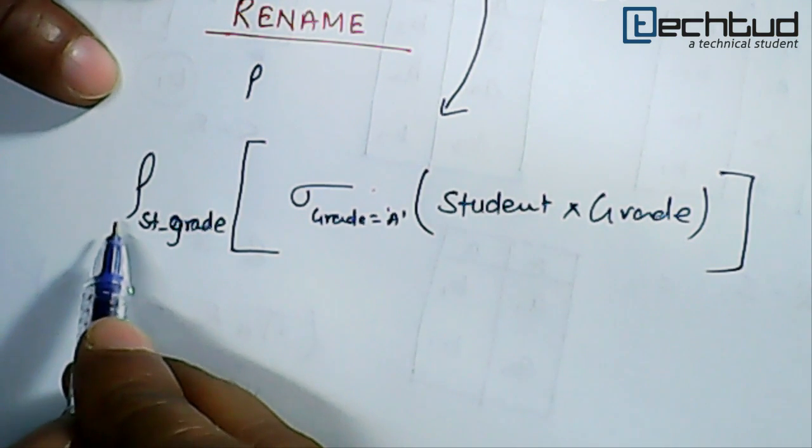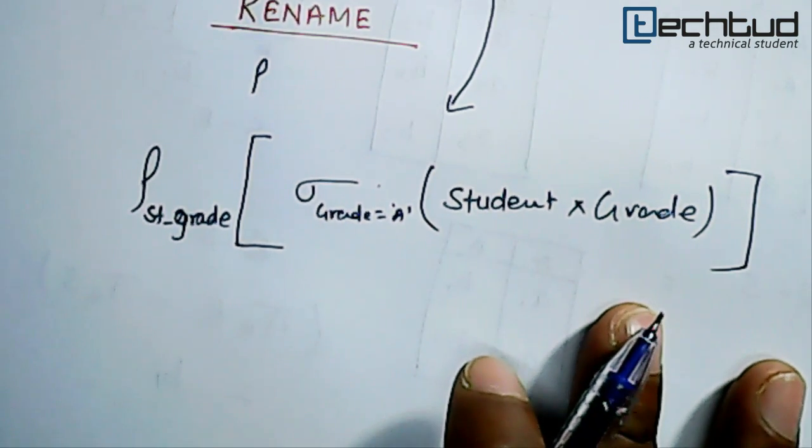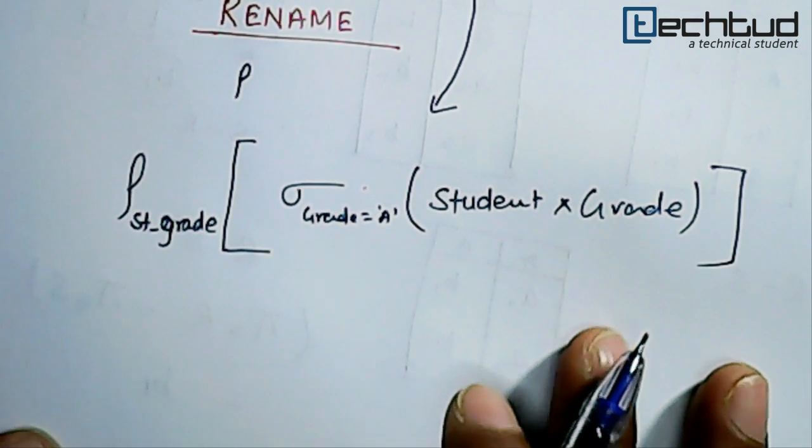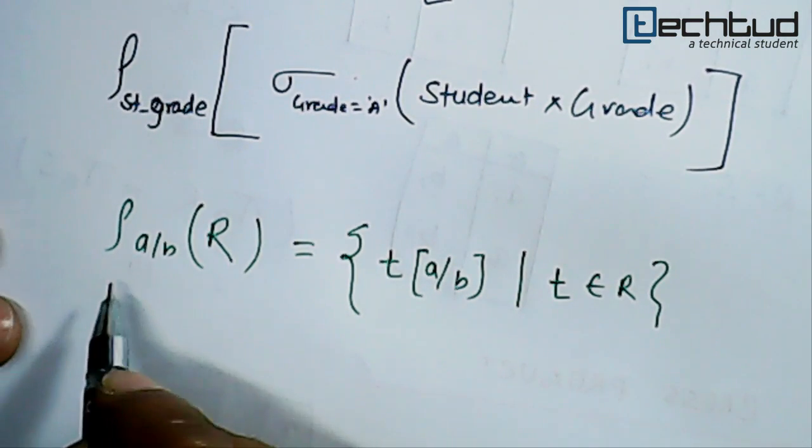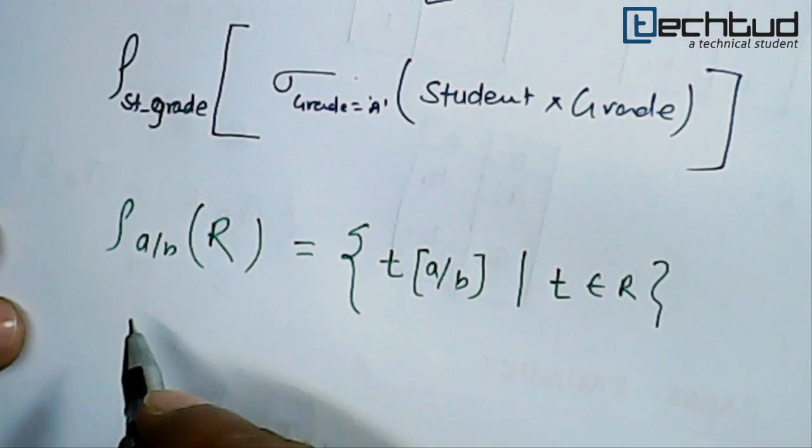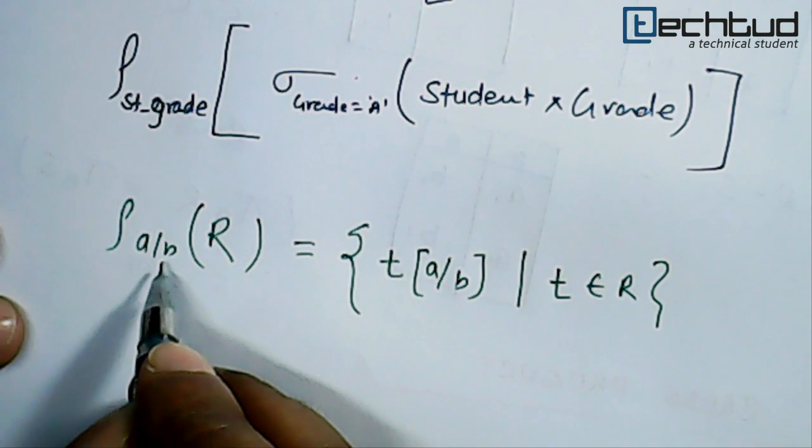What do we mean by this? By writing ρ_a(b), it means that this attribute b will be renamed as a. So this rename operation - the resultant will be a tuple where this attribute is renamed.